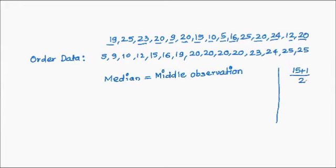So in this case, it will be 15 plus 1 divided by 2 and that would be equal to 8. So we need to find now the 8th data element. And we count it and we find that the 8th data element is 20.